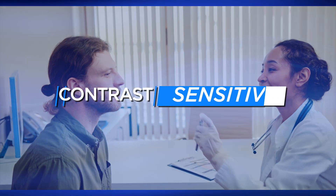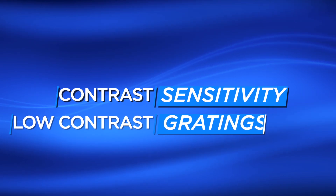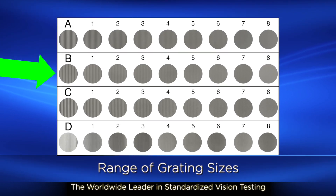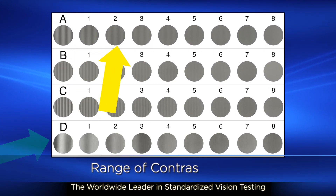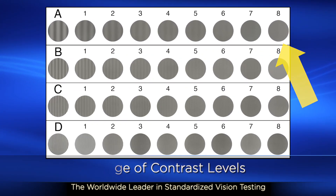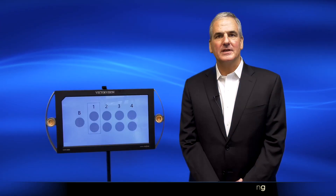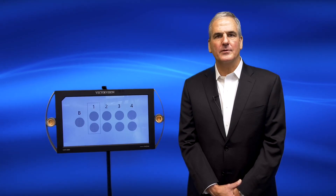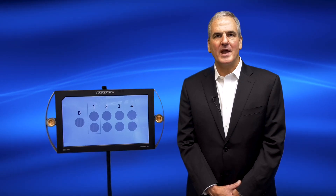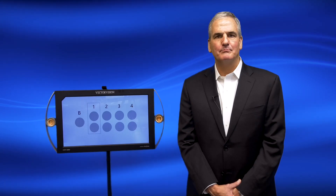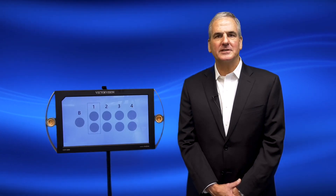The third type of test is the most sensitive. This is called contrast sensitivity with low contrast gratings. In this test, the patient is presented a range of grating sizes over a range of contrast levels, and the patient is asked at what contrast level they can just detect the gratings. This test differs from the others in that it uses a detection task — the patient is asked when they can detect the grating, as opposed to having to identify a letter. As stated earlier, detection tasks are much more sensitive than identification tasks.